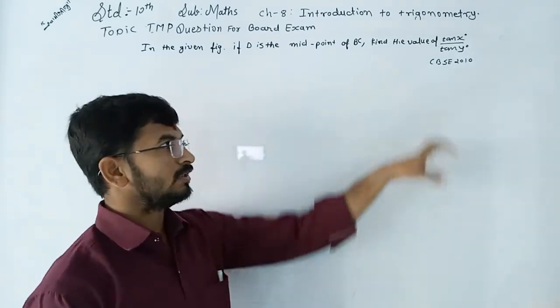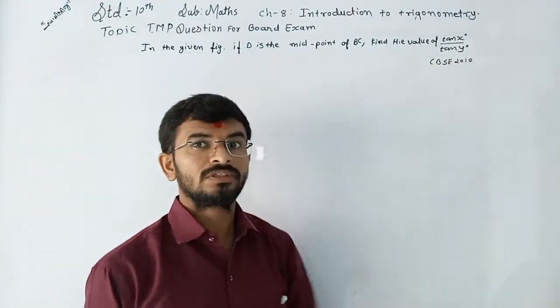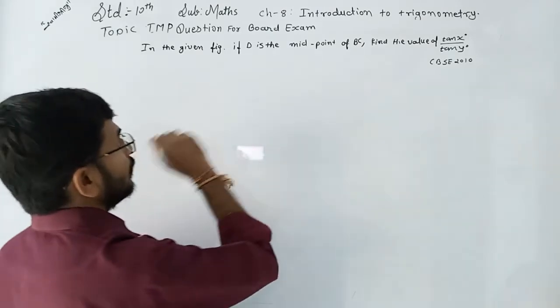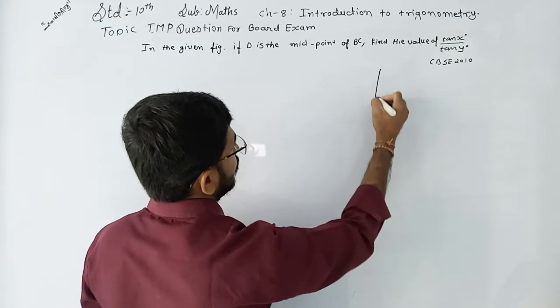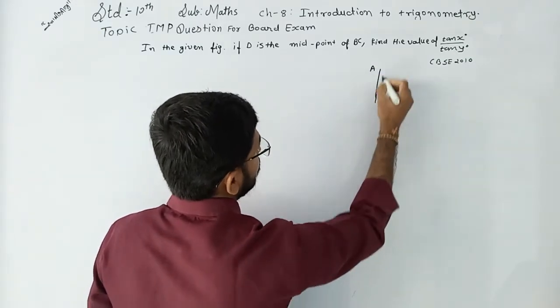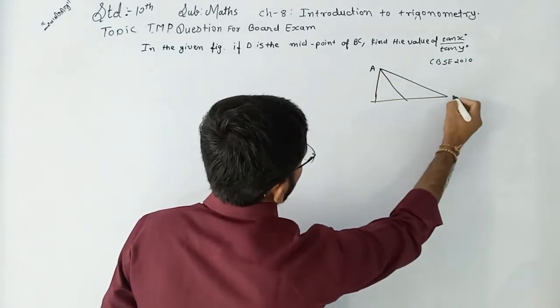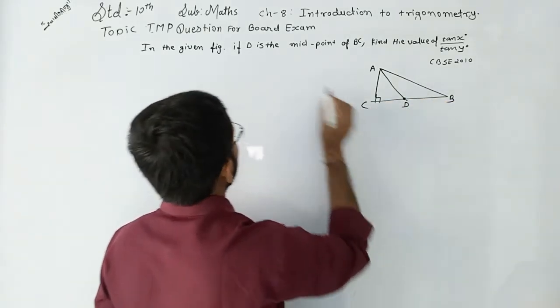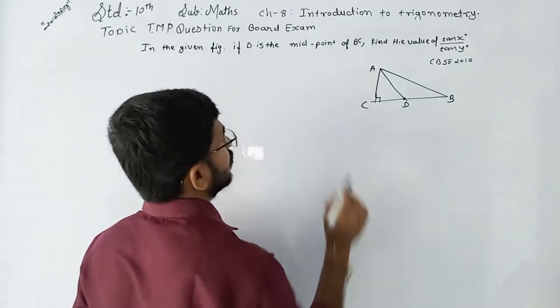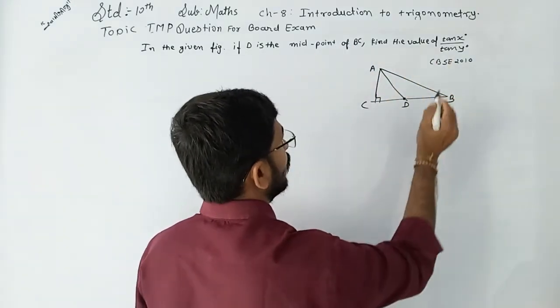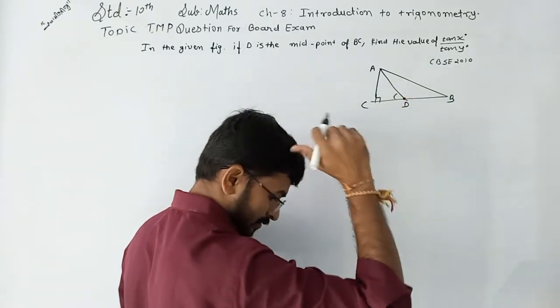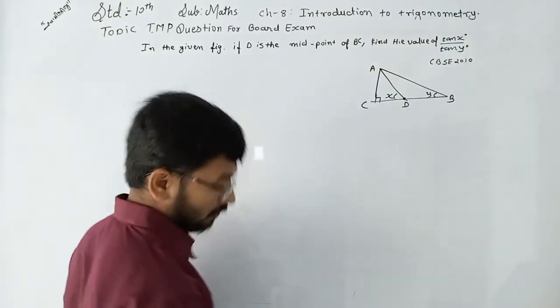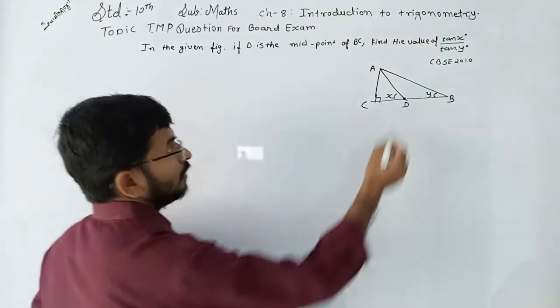Here the question is: In the given figure, first of all we draw the figure based on the given triangle ABC with right angle at C, and here is D. In the given figure, D is the midpoint of BC. Then find the value where angle is x and angle is y. We need to find the value of tan(x) upon tan(y).